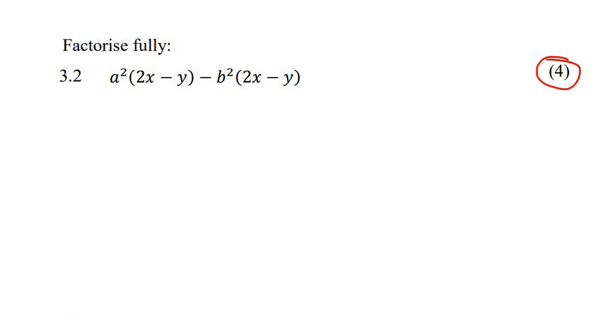Factorize for four marks. Okay, so whenever you've got the situation where you've got two of the same bracket, take that bracket out as a common factor. So that would be 2x minus y, which you take out as a common factor.